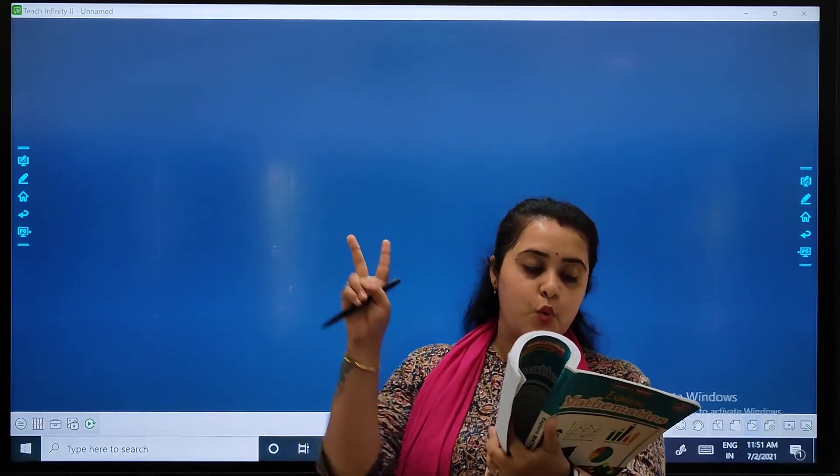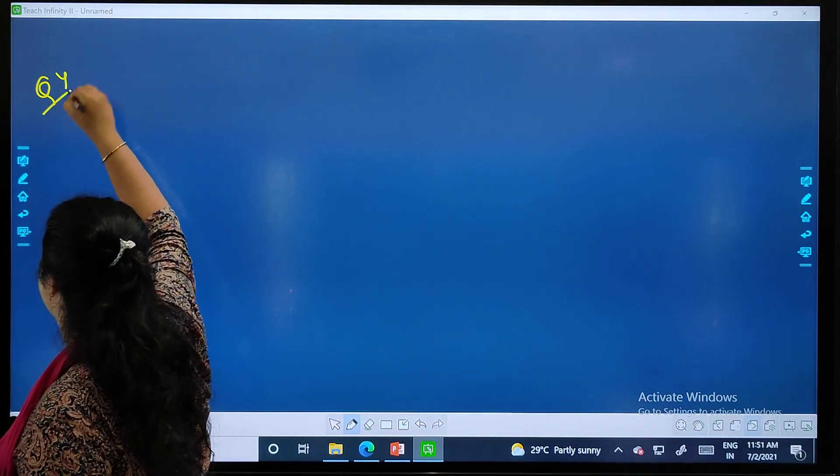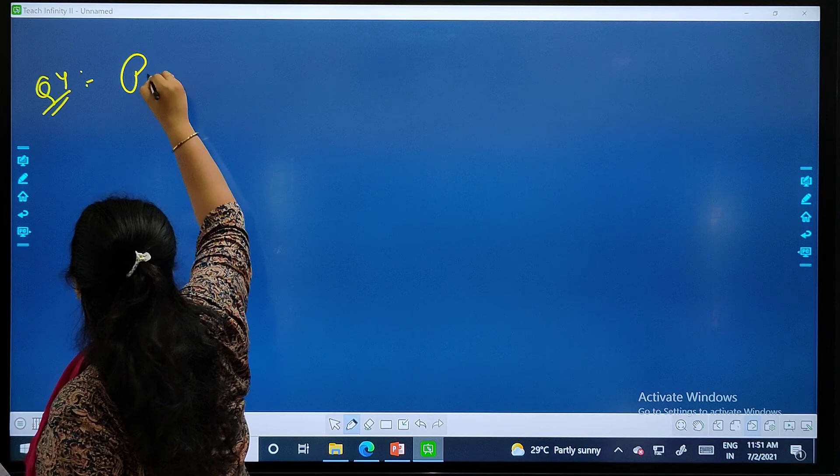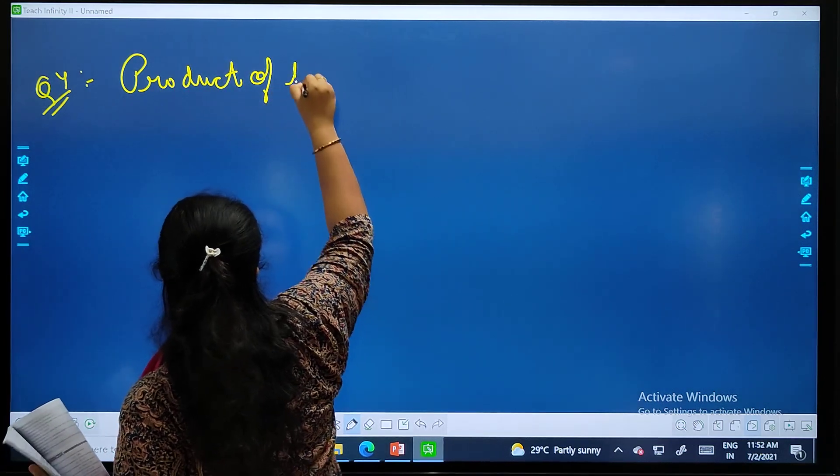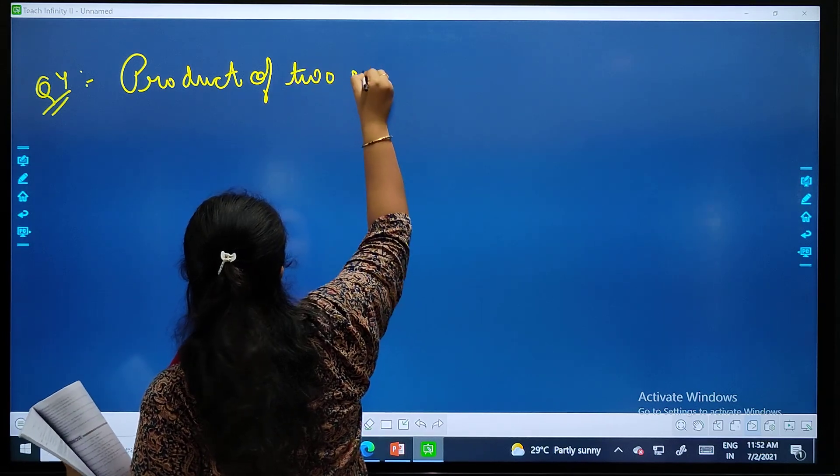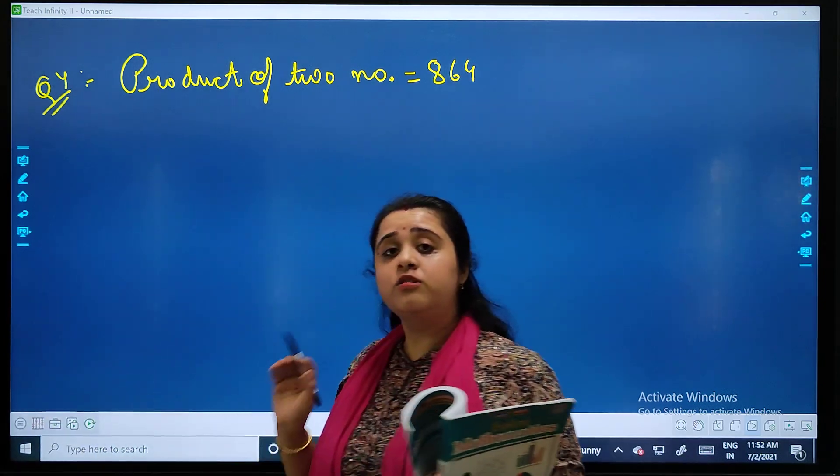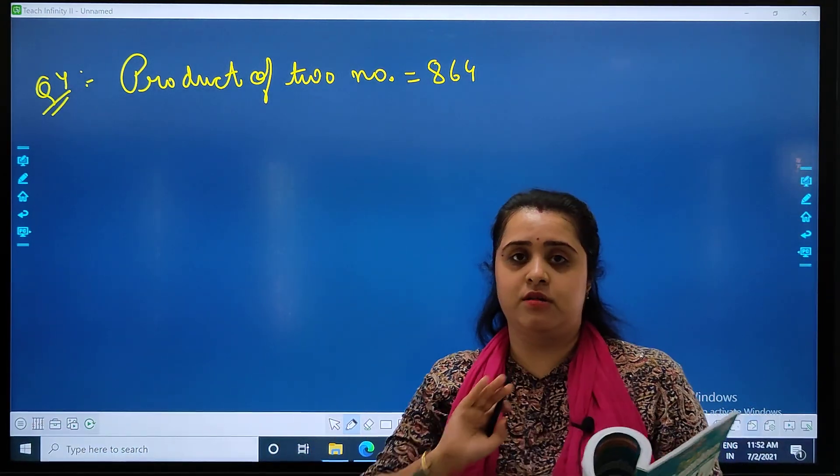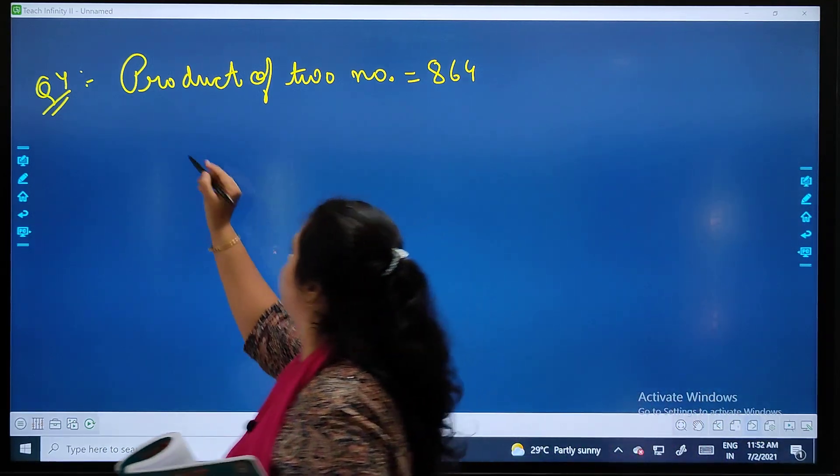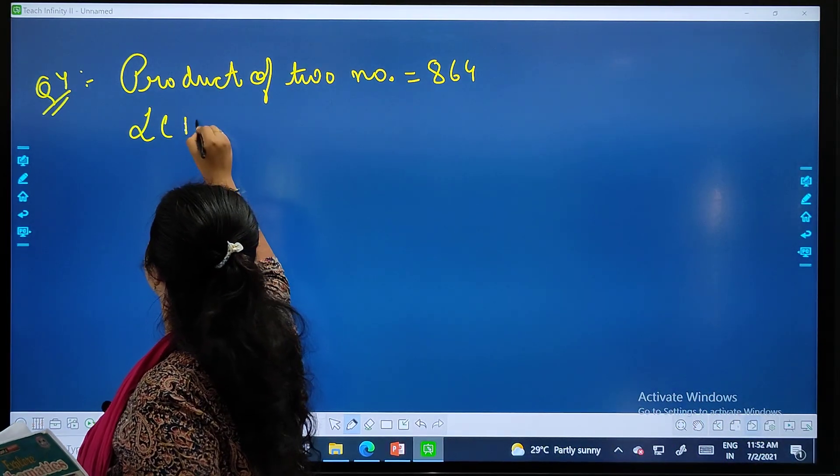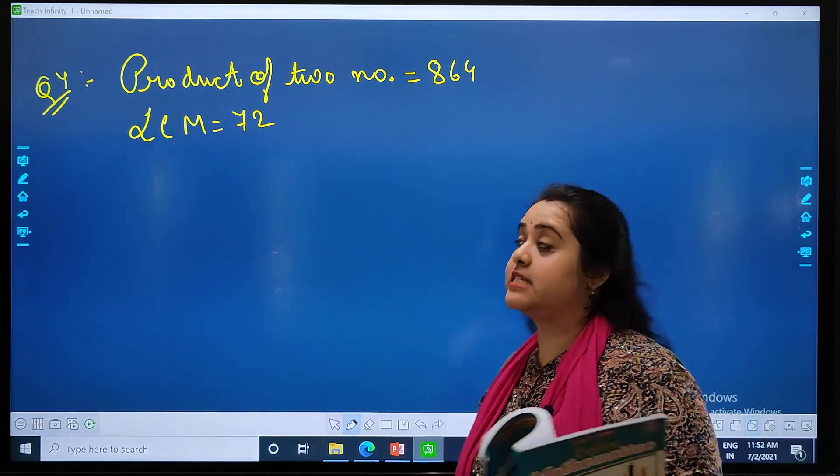The product of two numbers is 864. Now in this case, we have given the product of two numbers. Product of two numbers is 864. Always jot down the details which are given in question, okay? If their LCM is 72, LCM is 72.